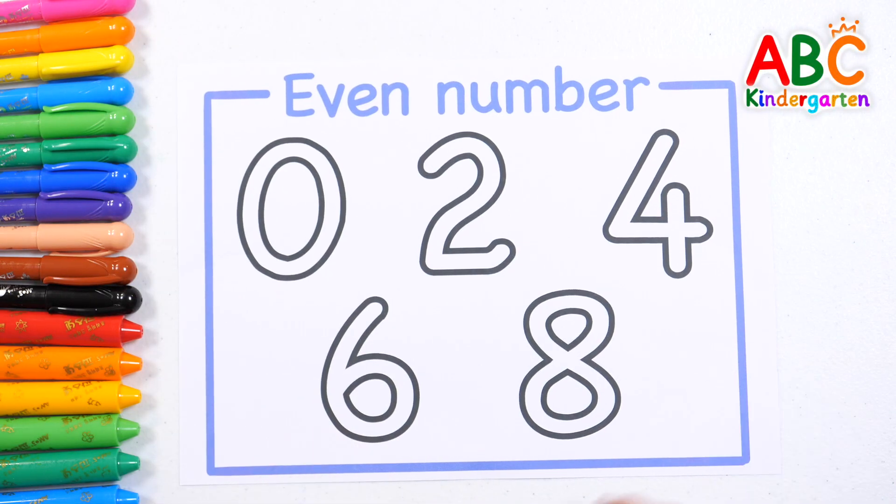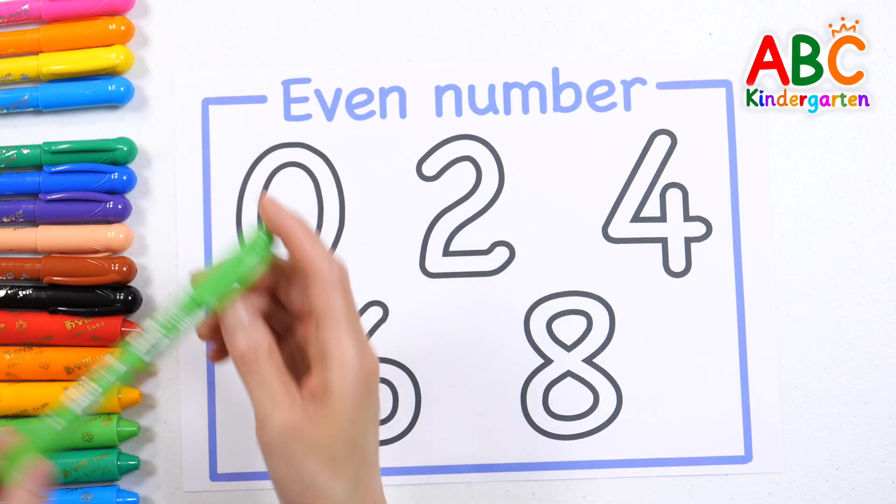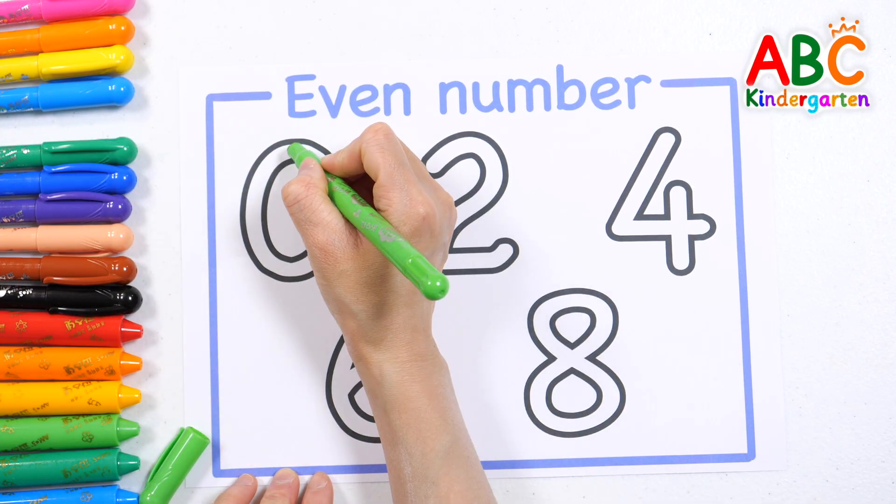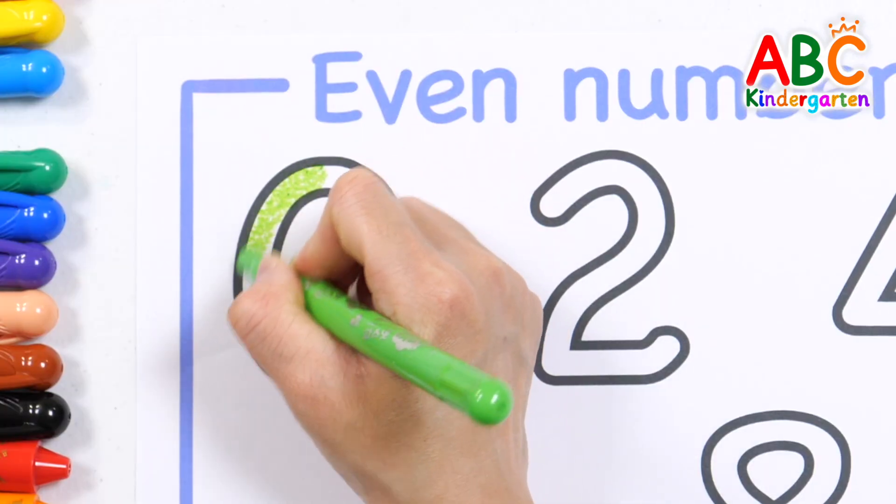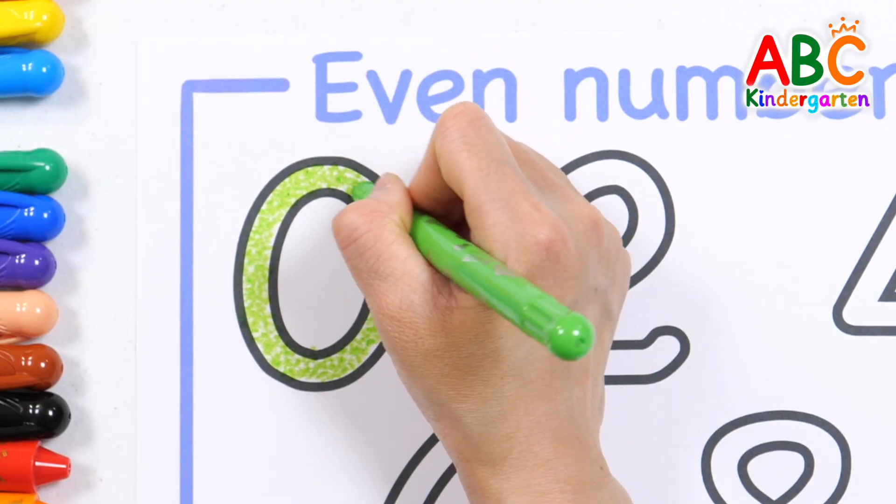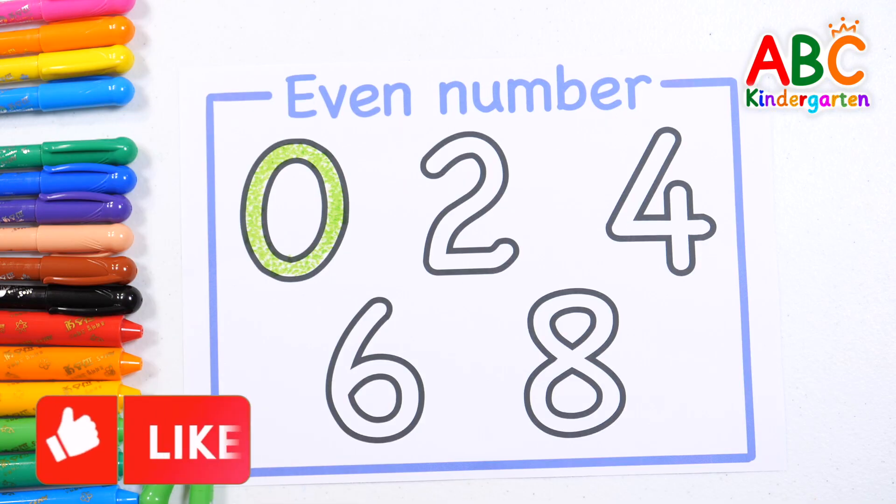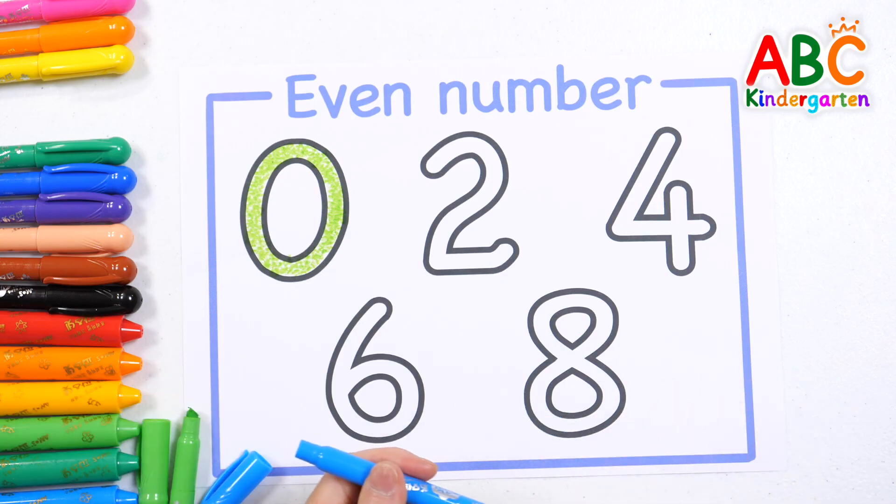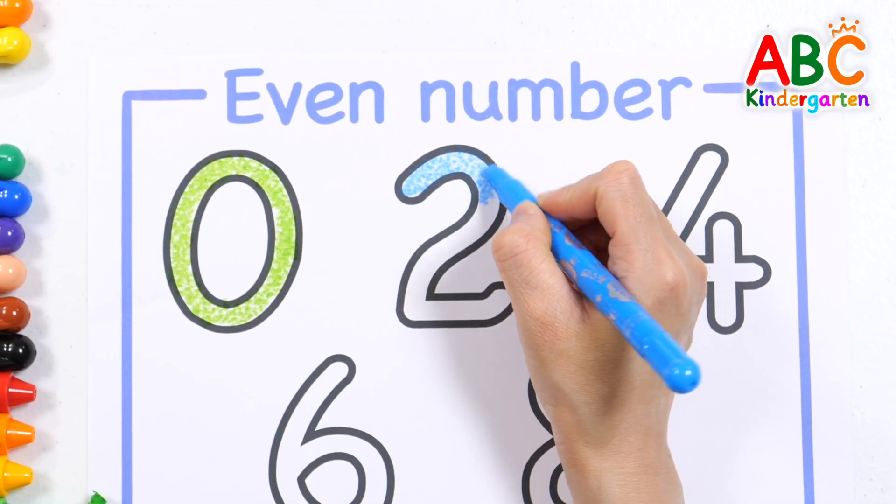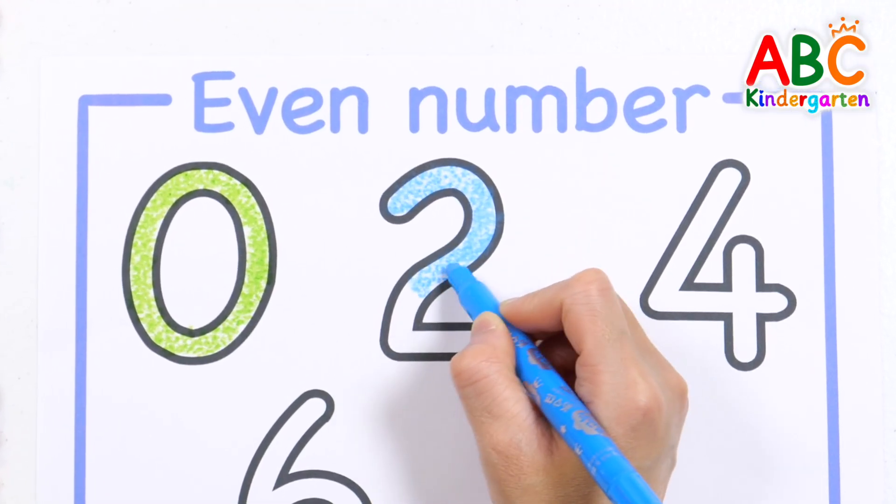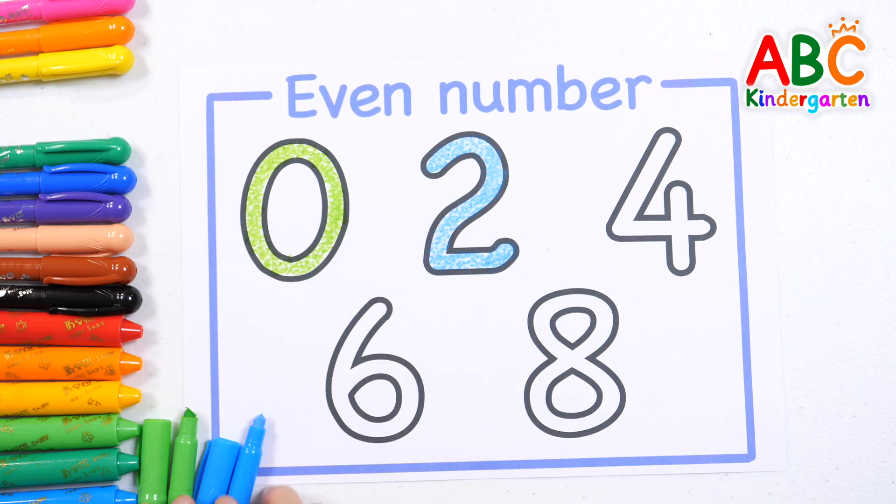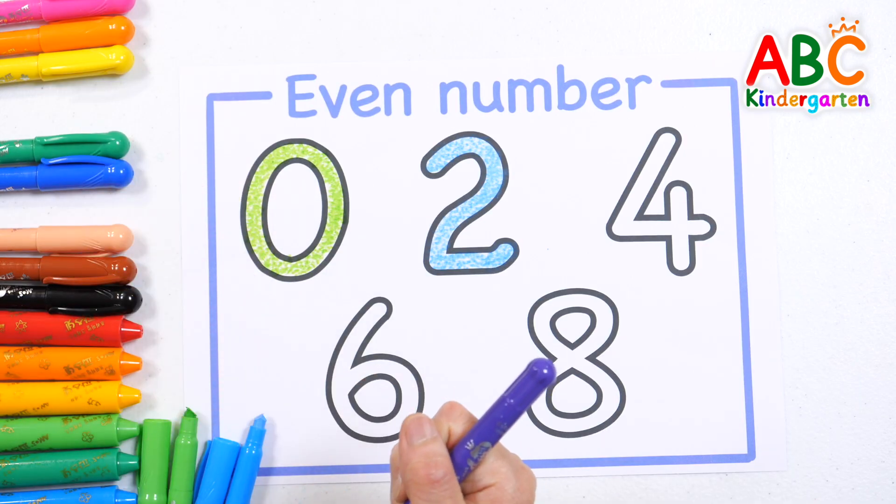What numbers are even numbers? Let's color each number with different crayons and read them out loud. Color it with light green: zero. Color it with light blue: two. Color it with purple: four.